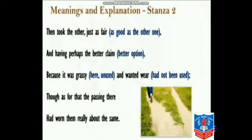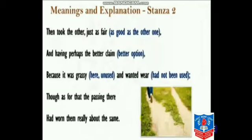The poet chose the less travelled road because he feels it will make a big difference in his future. But 'as for that, the passing there had worn them really about the same' — as he goes further ahead, he realizes that both roads ahead were equally worn out, and just as many people had walked on that road as on the one he is travelling. So ultimately, both roads seemed to be the same.